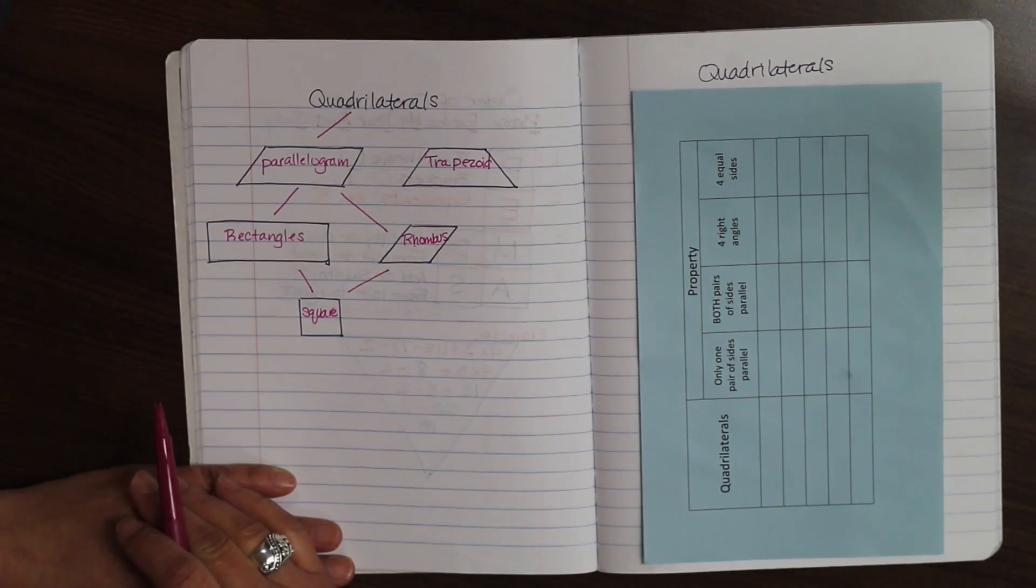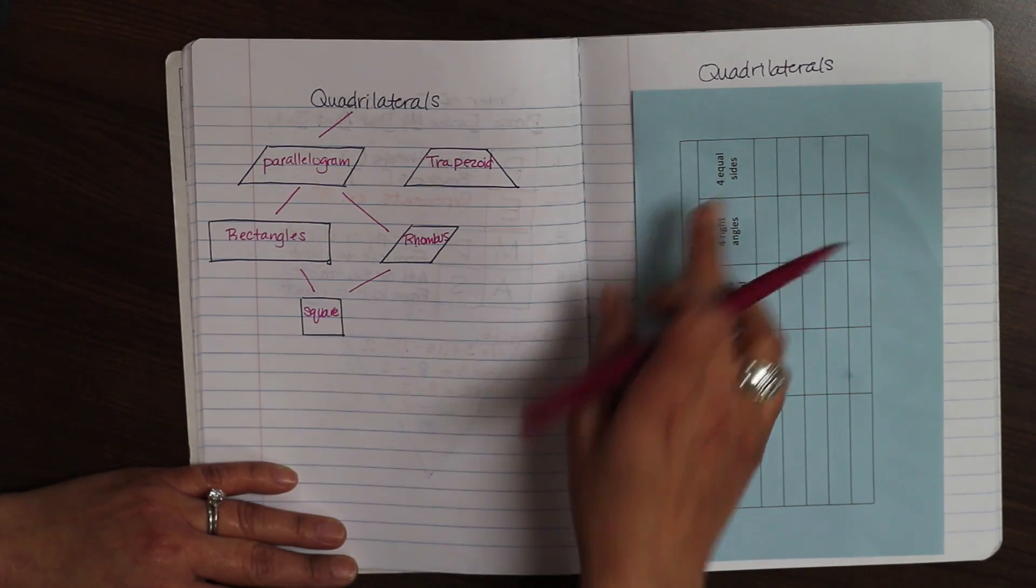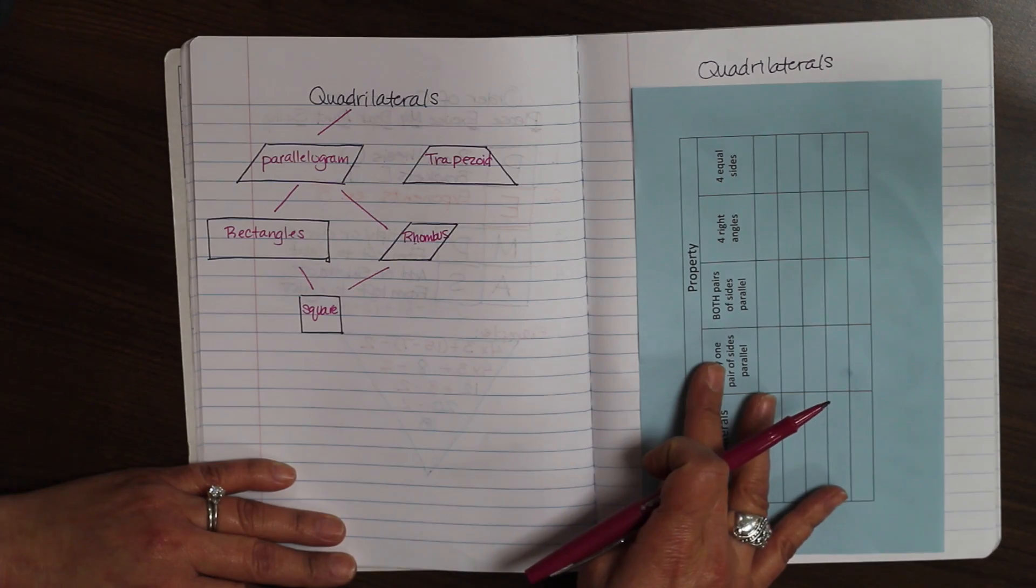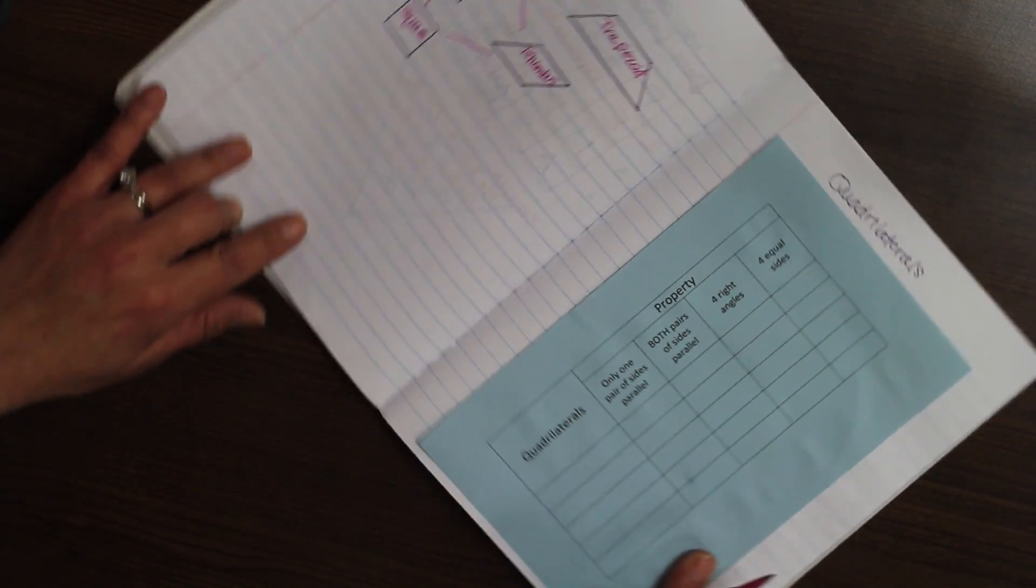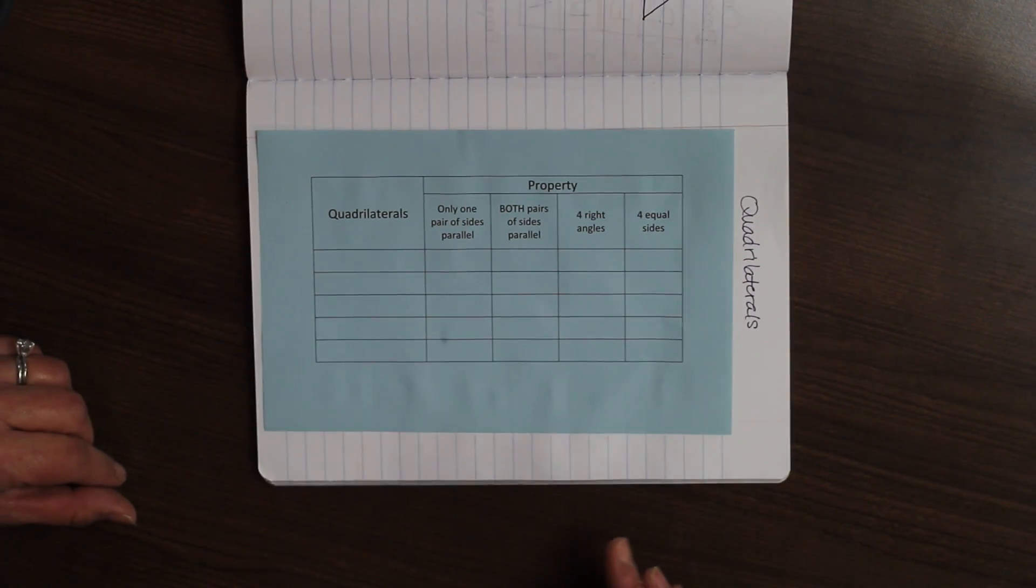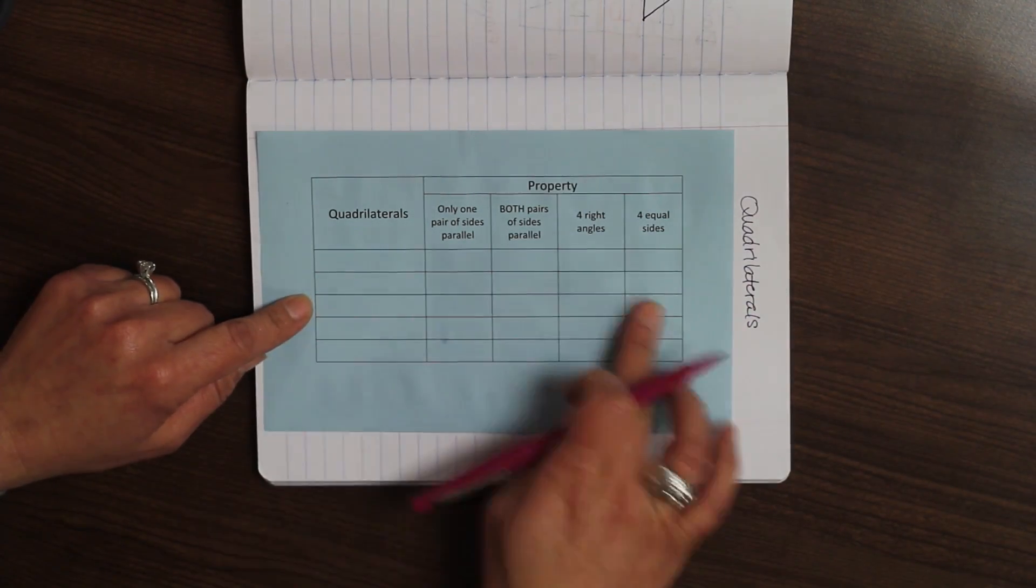So, these are the five shapes that we're going to talk about, and we're going to talk about some of the attributes that they have. You were given a piece of paper to glue in your interactive math notebook, on the right-hand side, and I am just going to switch it, and we'll talk about it like this.